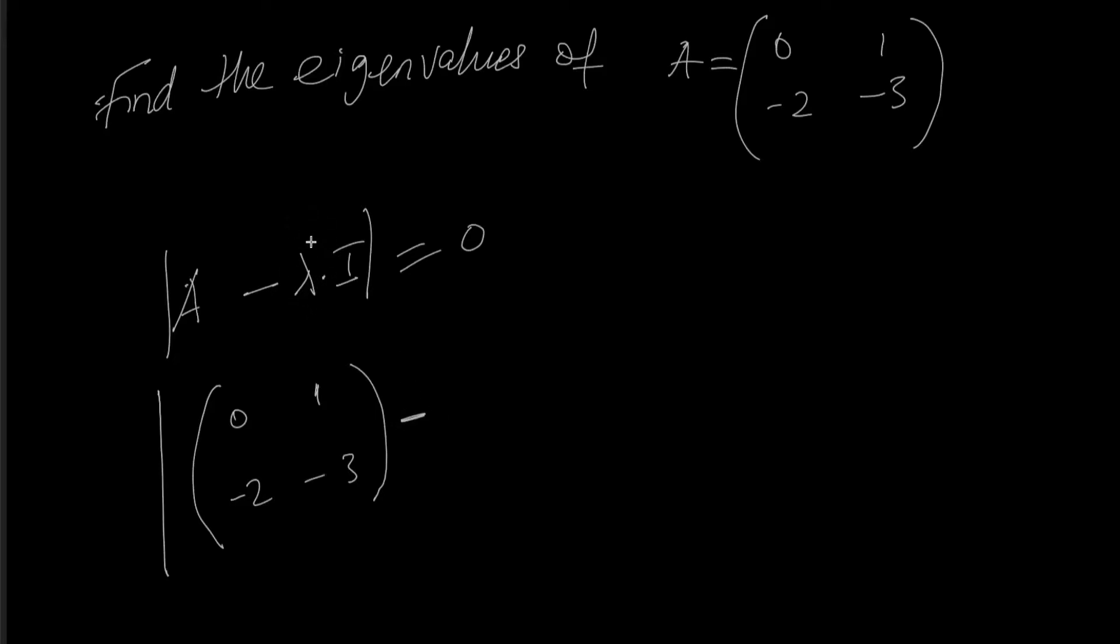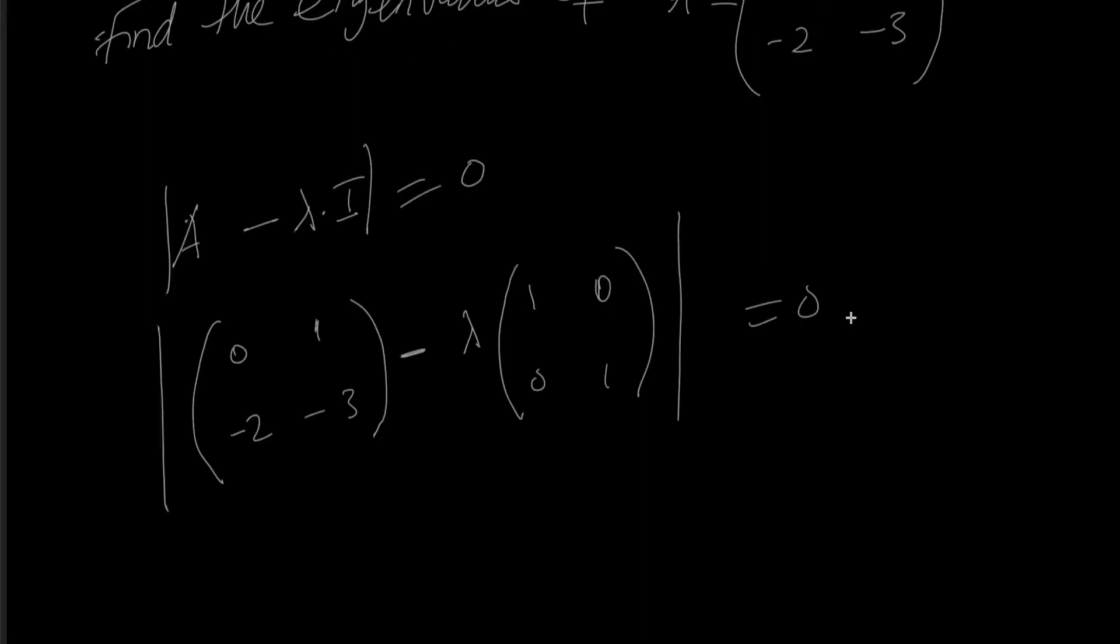We're going to put the determinant of this minus, then we put this minus λ, which is what we are looking for, the eigenvalue. The identity matrix is one zero, zero one. This is the determinant equal to zero. Once we have done this, let's keep this one equal to zero.